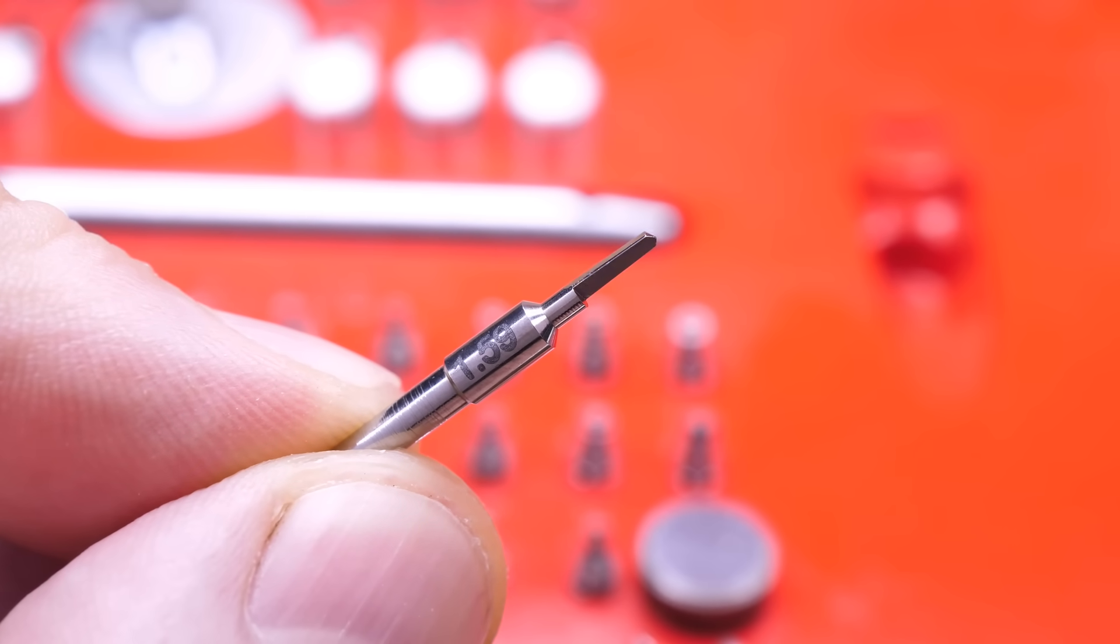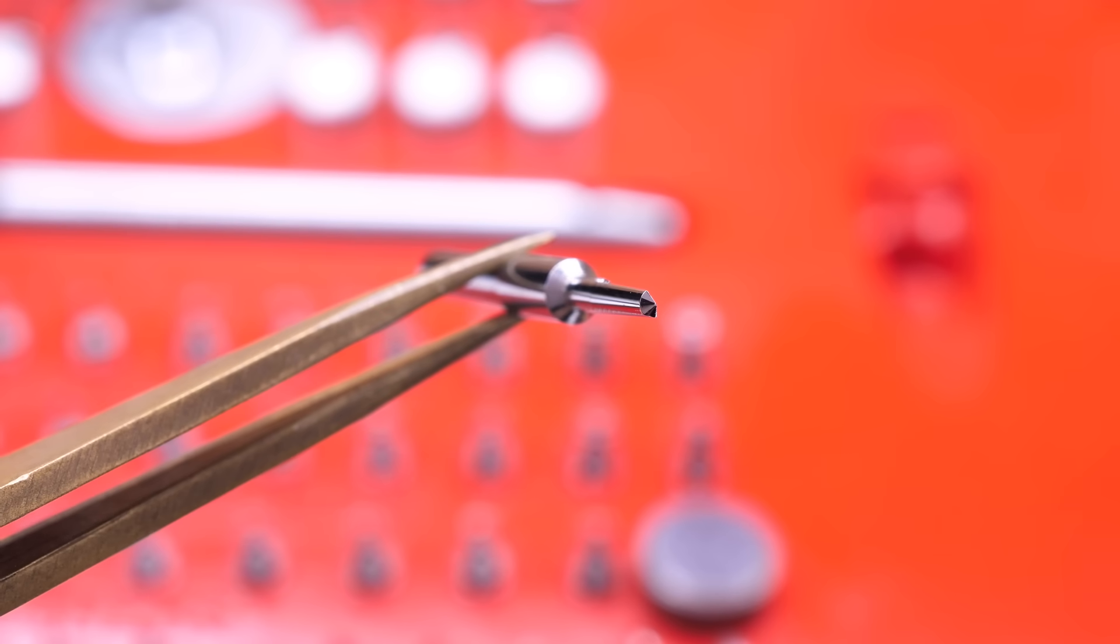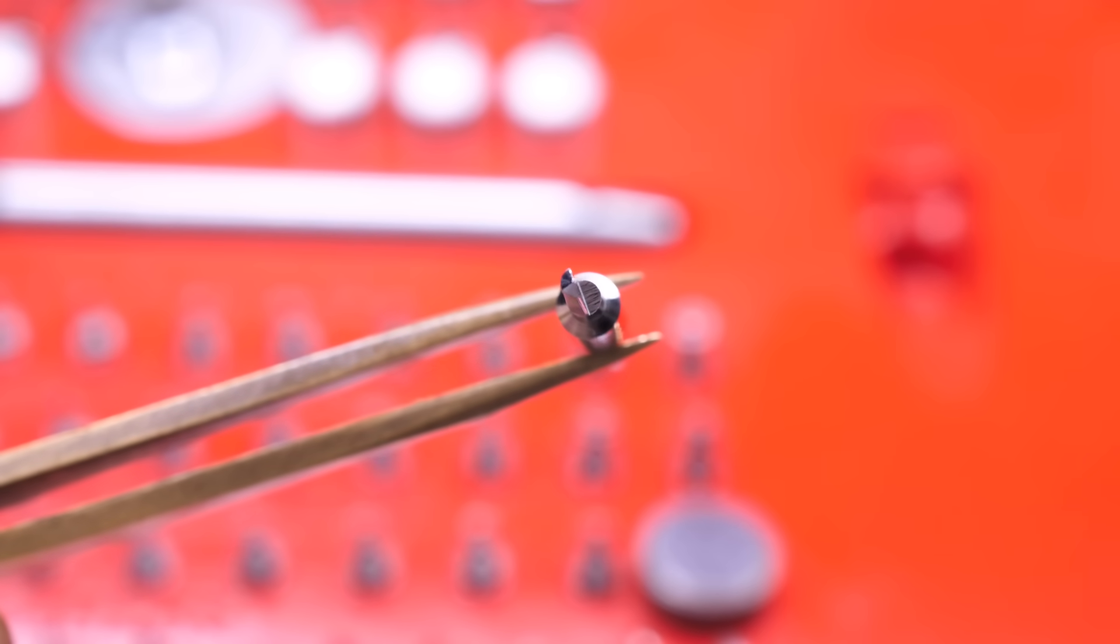You might recognize these cutters as a version of what engineers generally call a D-bit single lip cutter, so called because of the D shape of their cross section.